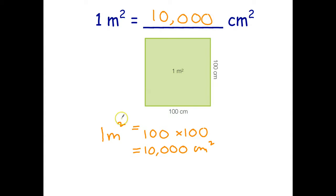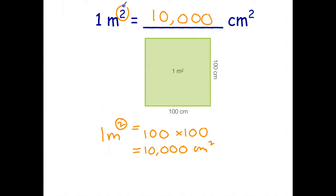So once again, because I've got a 2 here, I have to say one meter is 100 centimeters for the length and one meter is 100 centimeters for the width. Length times width gives us area, and I get 10,000 square centimeters. Students want to think there's meters and centimeters, so they want to write 100. That's true if it's just meters and centimeters, but because we're looking at area — square centimeters and square meters — you have to apply the conversion twice.